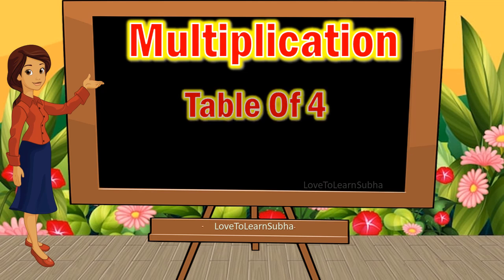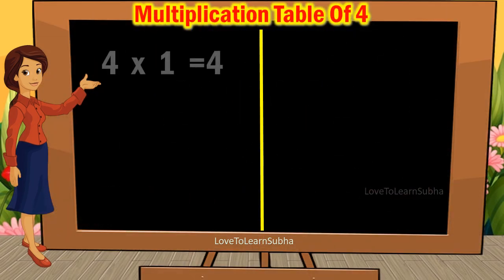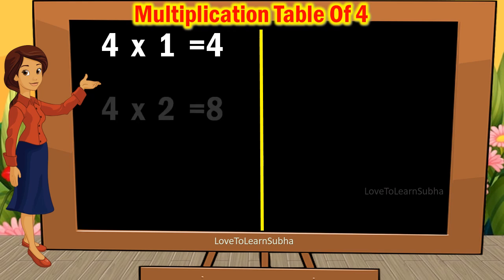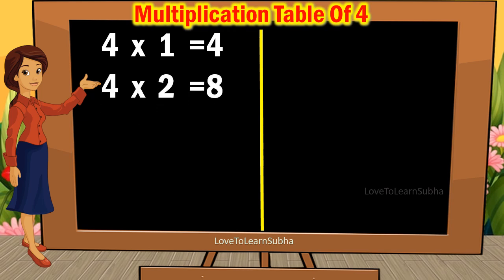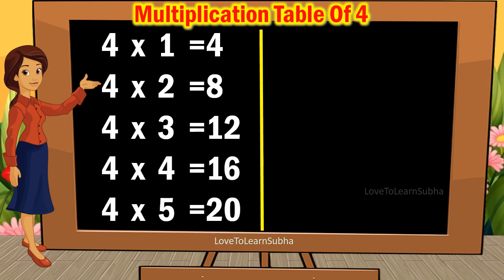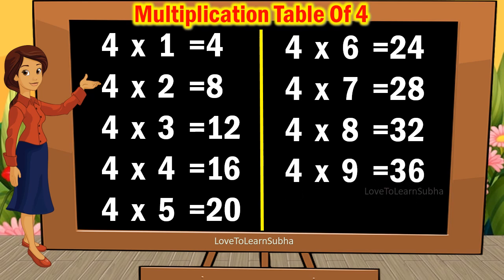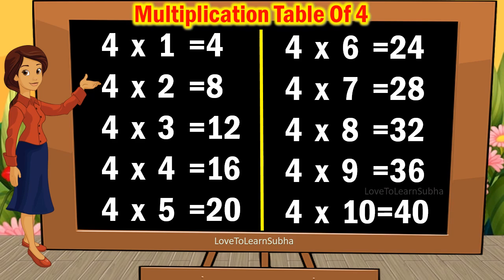Now let's repeat it once again. 4 ones are 4. 4 twos are 8. 4 threes are 12. 4 fours are 16. 4 fives are 20. 4 sixes are 24. 4 sevens are 28. 4 eights are 32. 4 nines are 36. 4 tens are 40.